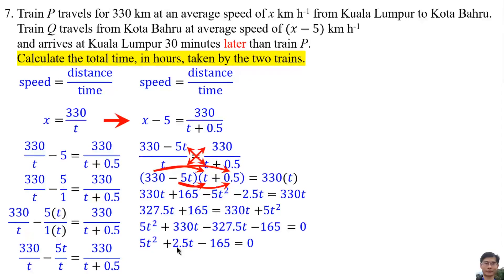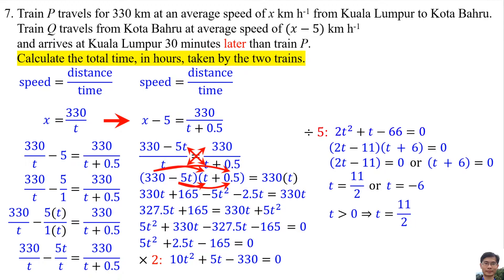Then solve the equation by multiplying 2 to all three terms. So T is 11 over 2. The total time is the time for train P, T, that is 11 over 2, plus the time for train Q, T plus 0.5. It means 11 over 2 plus 1 over 2. Total time is 11.5 hours.